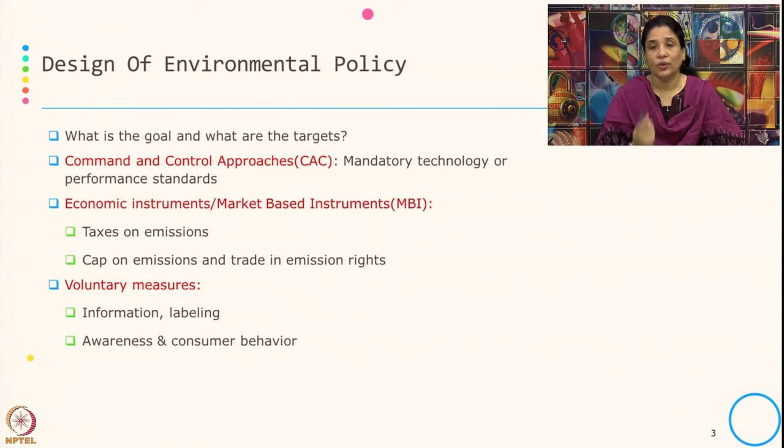An example of voluntary measures: suppose there are 100 companies that have to go through disclosure regulation. If a company is not part of a mandatory group but still goes for disclosure regulation and is disclosing, then this comes under the voluntary measure or voluntary initiative — when you go beyond the compliance, or even when organizations are not part of the compliance but still do it.